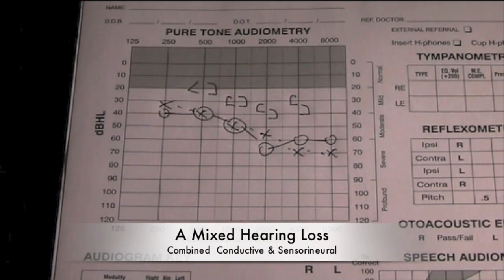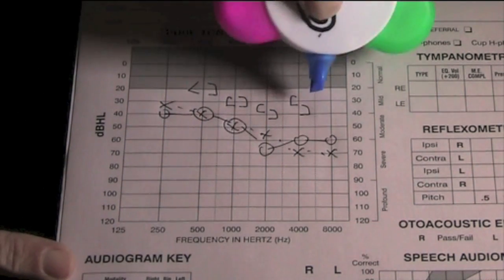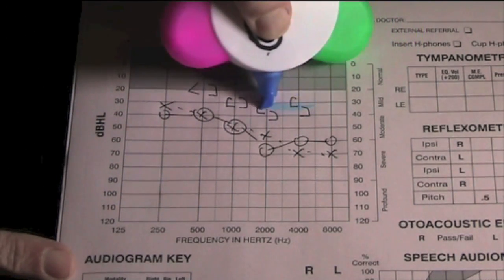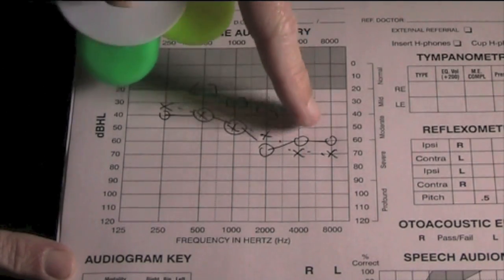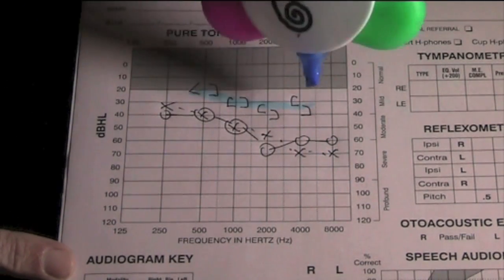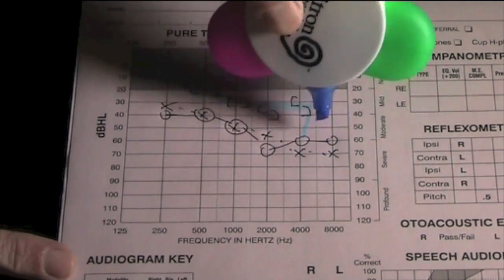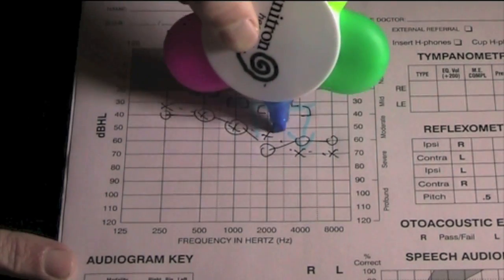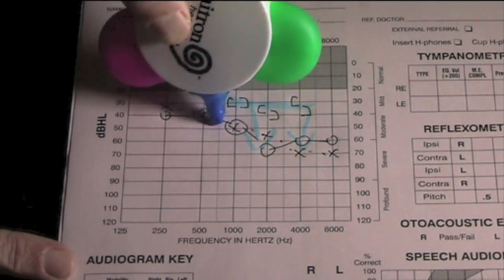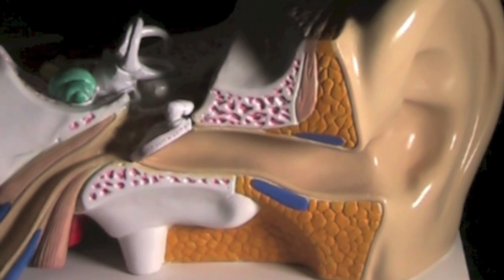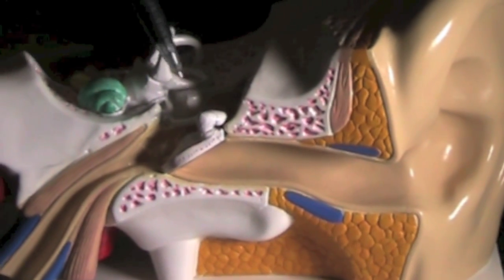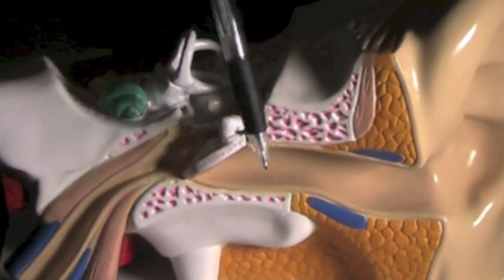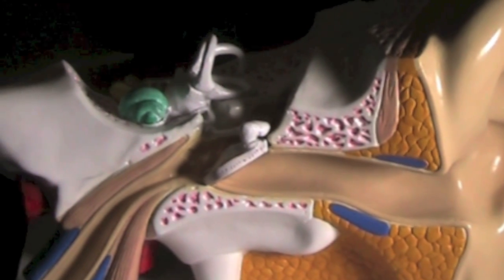This audiogram shows a mixed hearing loss. The results from the inner ear are down in comparison to the normal level, but you can see the overall hearing results are down even further. A mixed hearing loss involves all the different parts of the ear — the outer, middle, and inner ear.